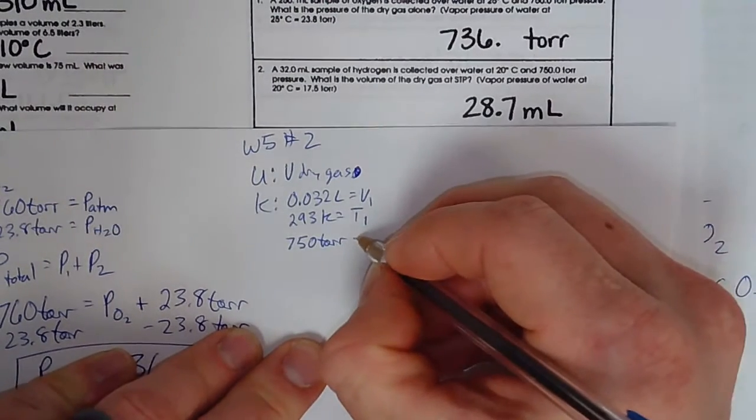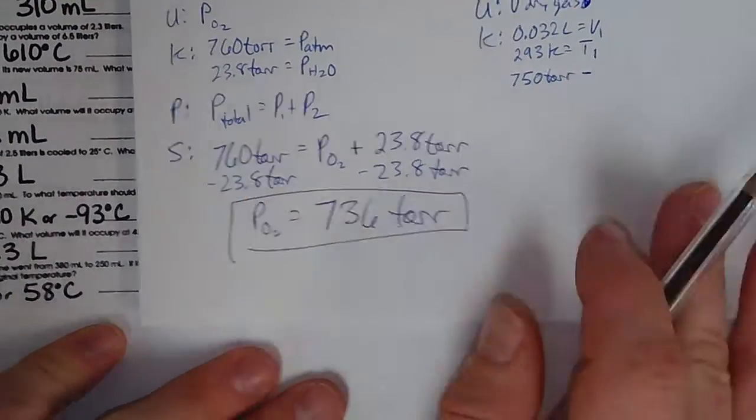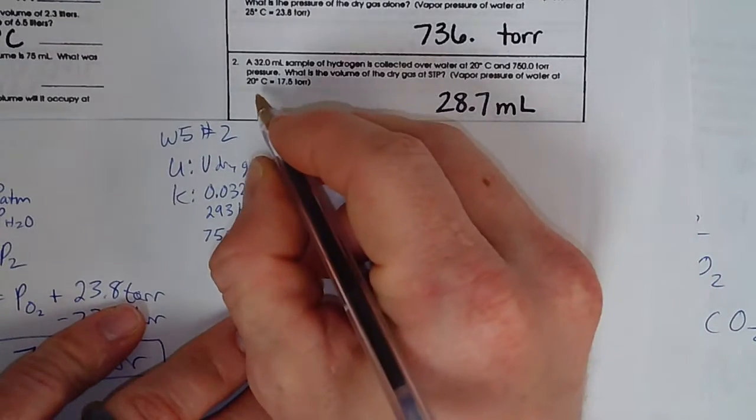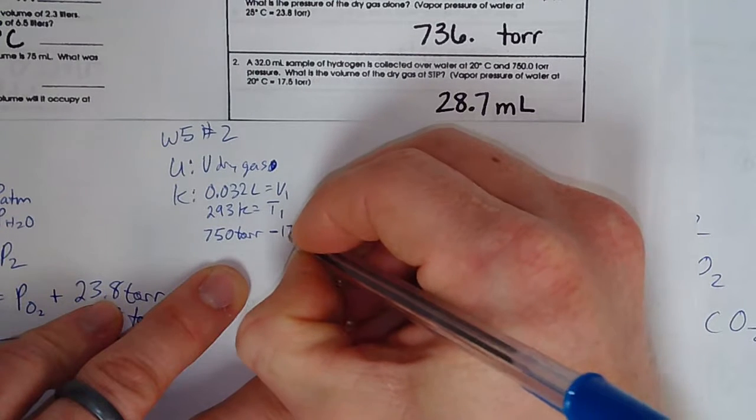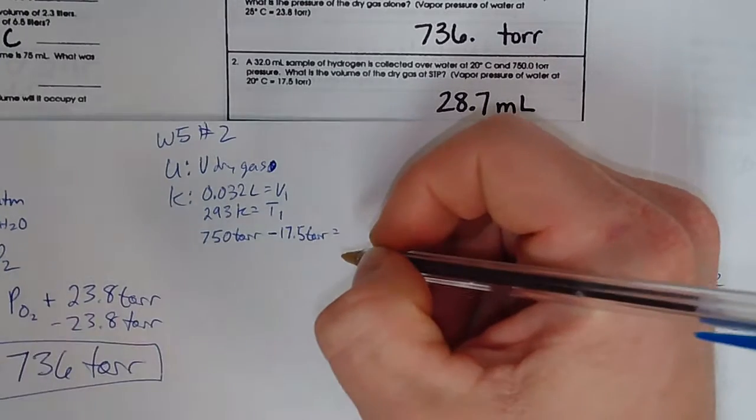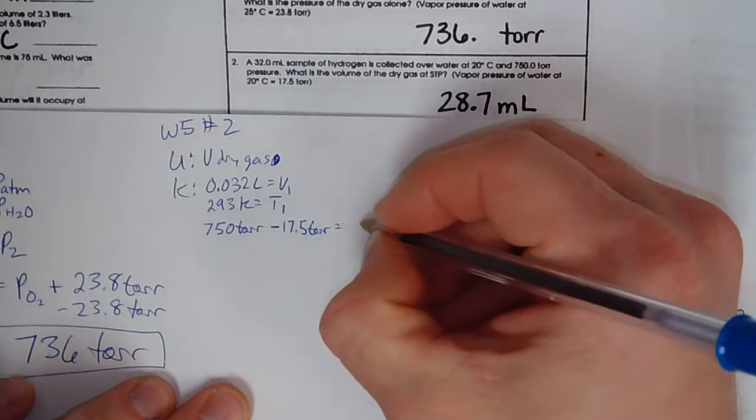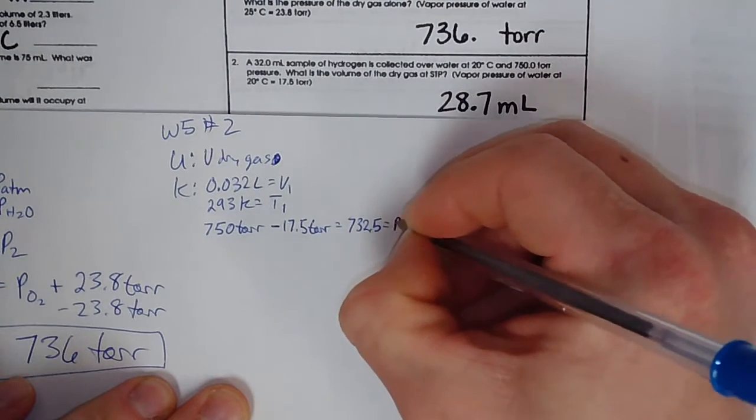Now to save time and space here, I think you can subtract this from that. So let's just simplify this a little bit. And we know we've got to subtract out the vapor pressure of water to get the pressure of the dry gas. So let's do that. So 750 minus 17.5 gives us 732.5, and that's our initial pressure.